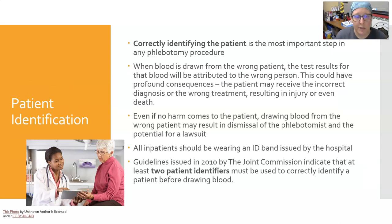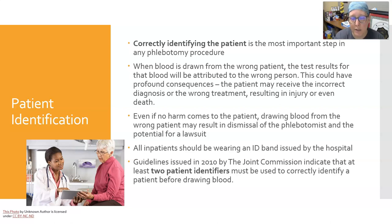Next is patient identification — this is a critical step. You need to correctly identify the patient; it is absolutely the most important step in any phlebotomy procedure. When blood is drawn from the wrong patient, the test results will be attributed to the wrong person. This could have profound consequences: the patient may receive an incorrect diagnosis or wrong treatment, which could result in injury or even death. Even if no harm comes to the patient, drawing blood from the wrong person may result in dismissal of the phlebotomist and potential lawsuit.